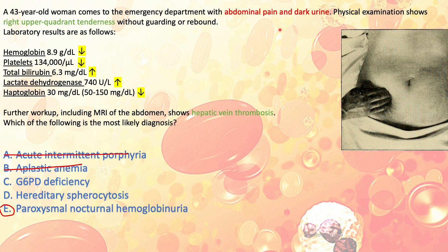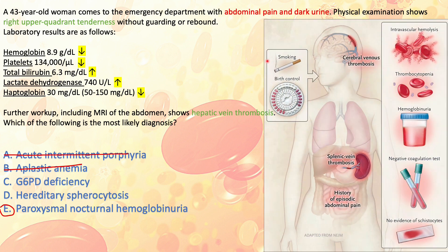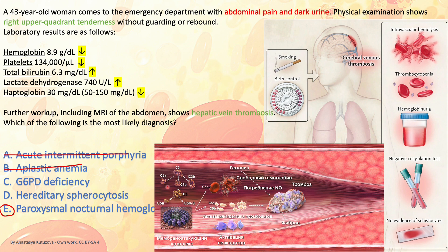We have a 43-year-old woman coming to the ER with abdominal pain and dark urine. Physical exam shows right upper quadrant tenderness, indicating something is wrong with her liver — hepatic vein thrombosis, or Budd-Chiari syndrome, leads to backup of blood in the liver and the entire portal circulation, causing pain. Hemolysis releases cytokines and tissue factor, which initiates the procoagulant process.